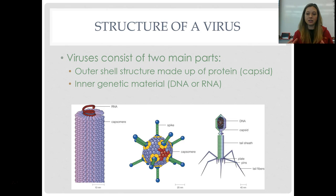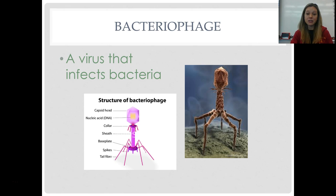A virus consists of two main parts and is very simple. It has an outer shell made of protein called the capsid, and then the genetic material inside, which is either DNA or RNA. Pick one of these viruses to draw as your diagram, and make sure you label the capsid and the DNA.